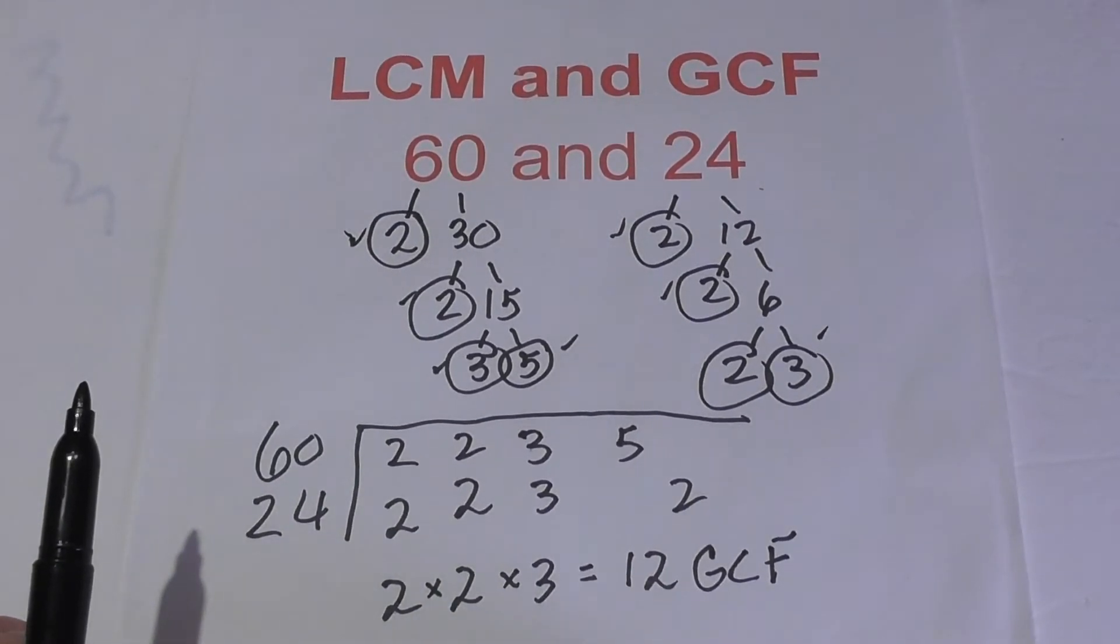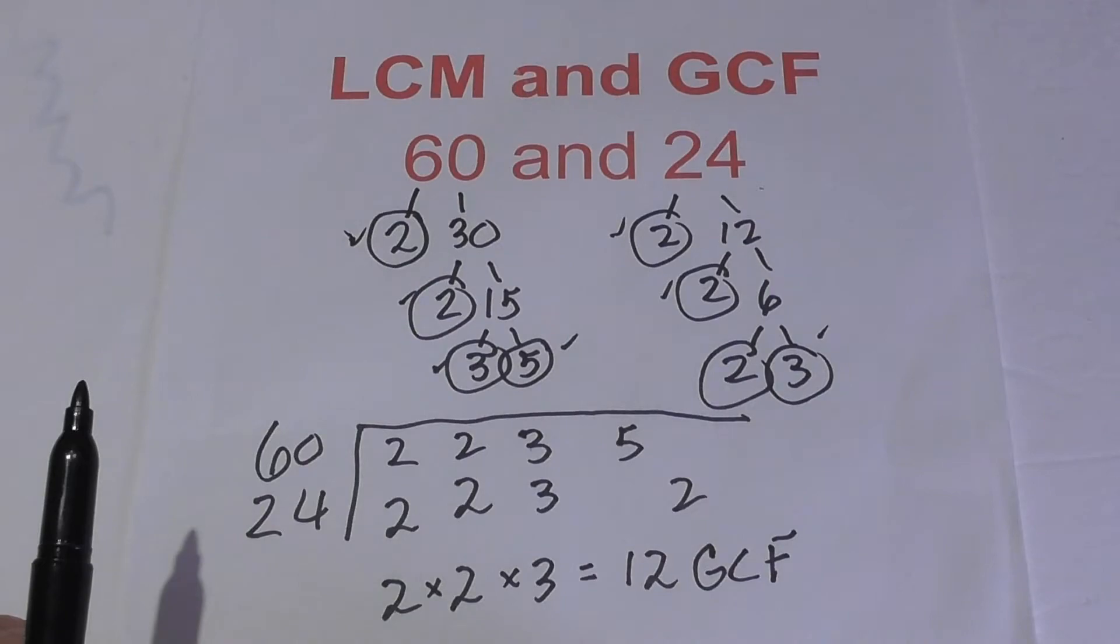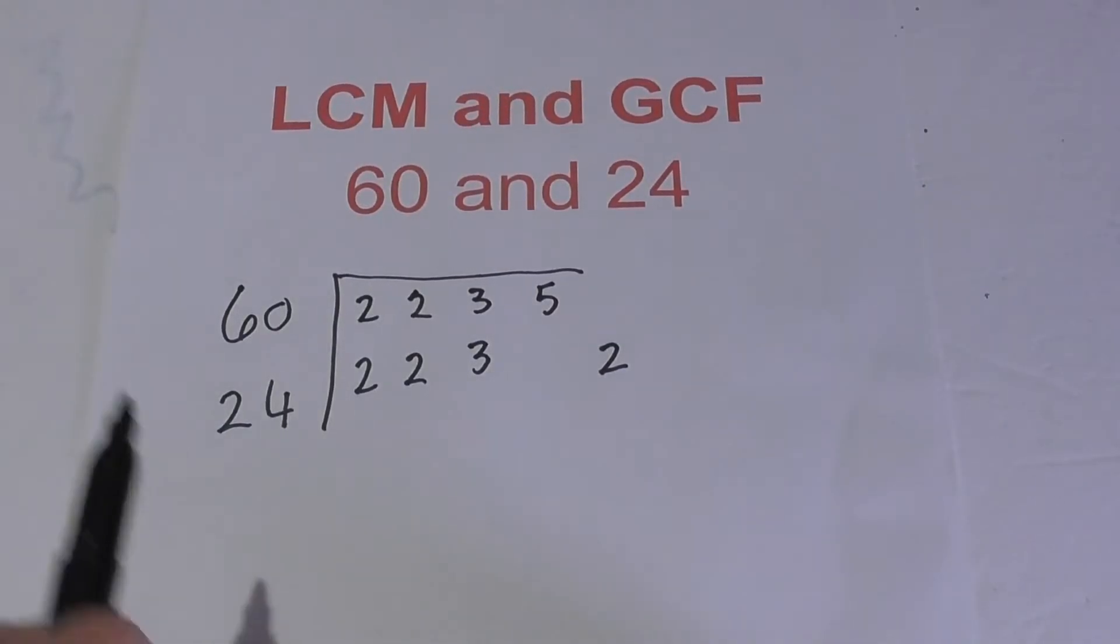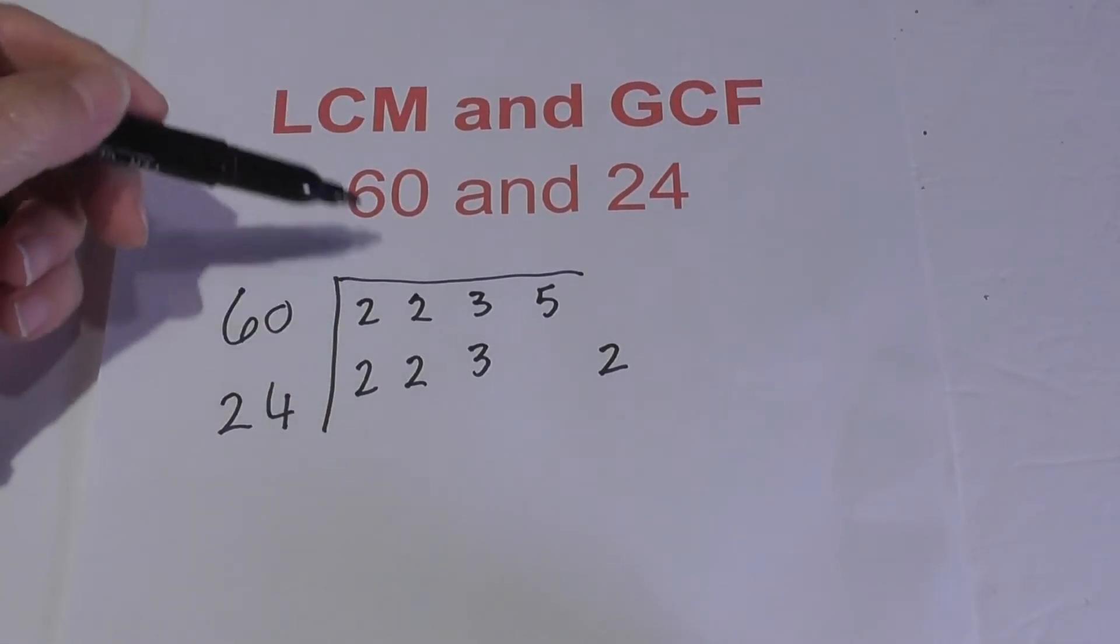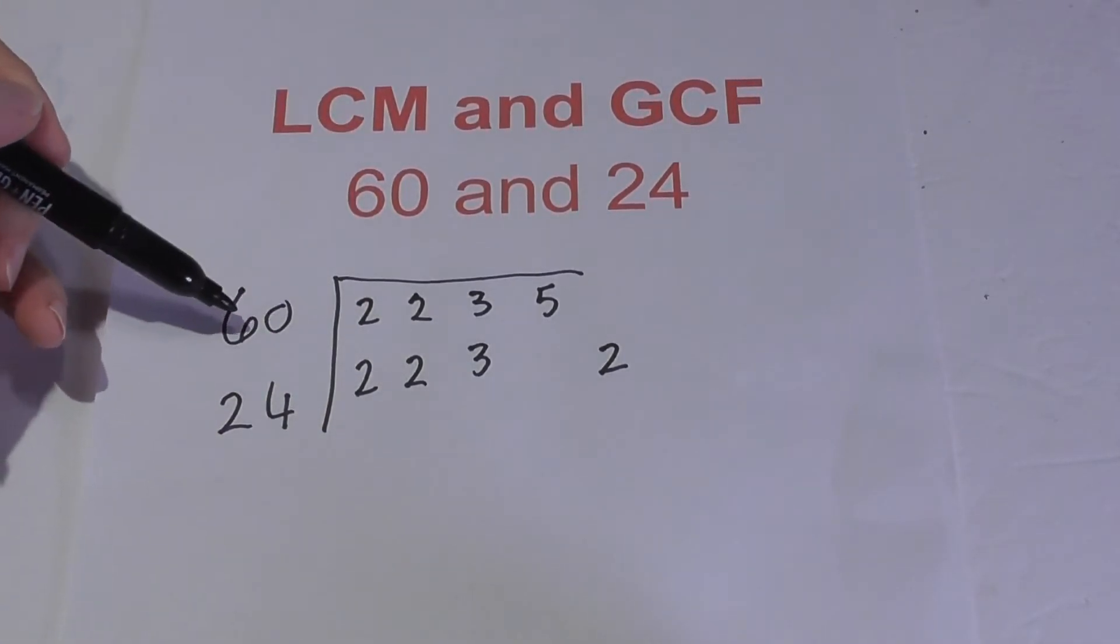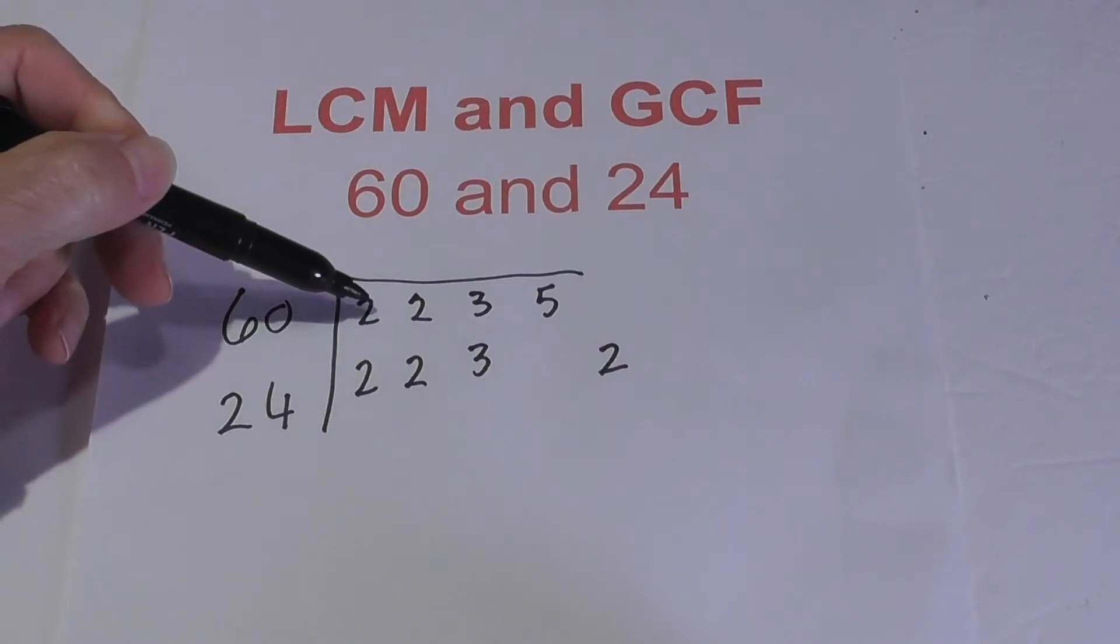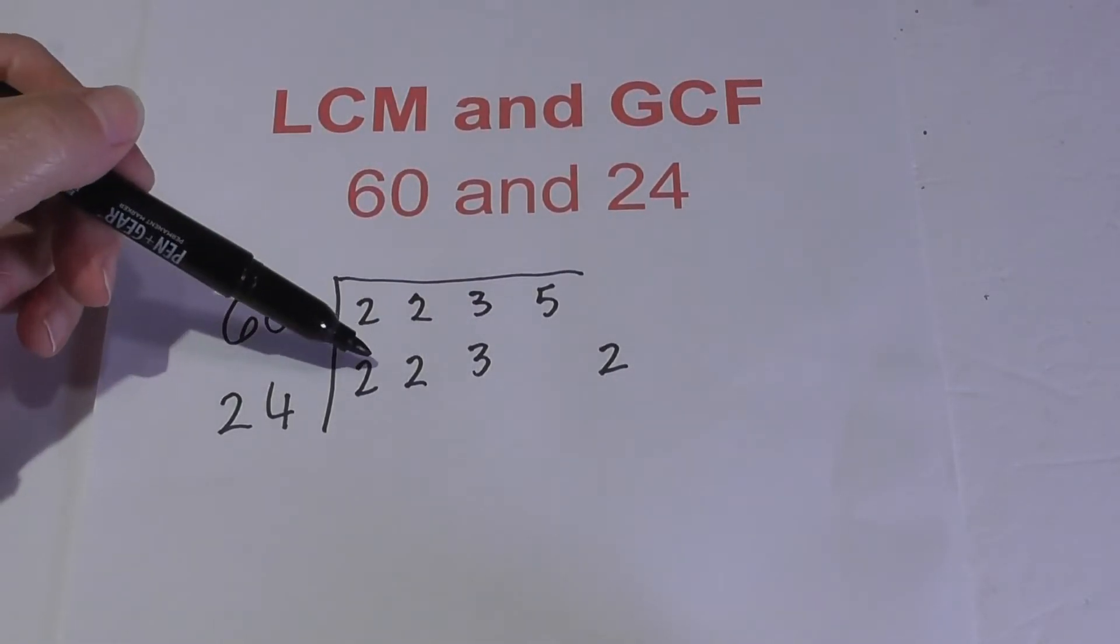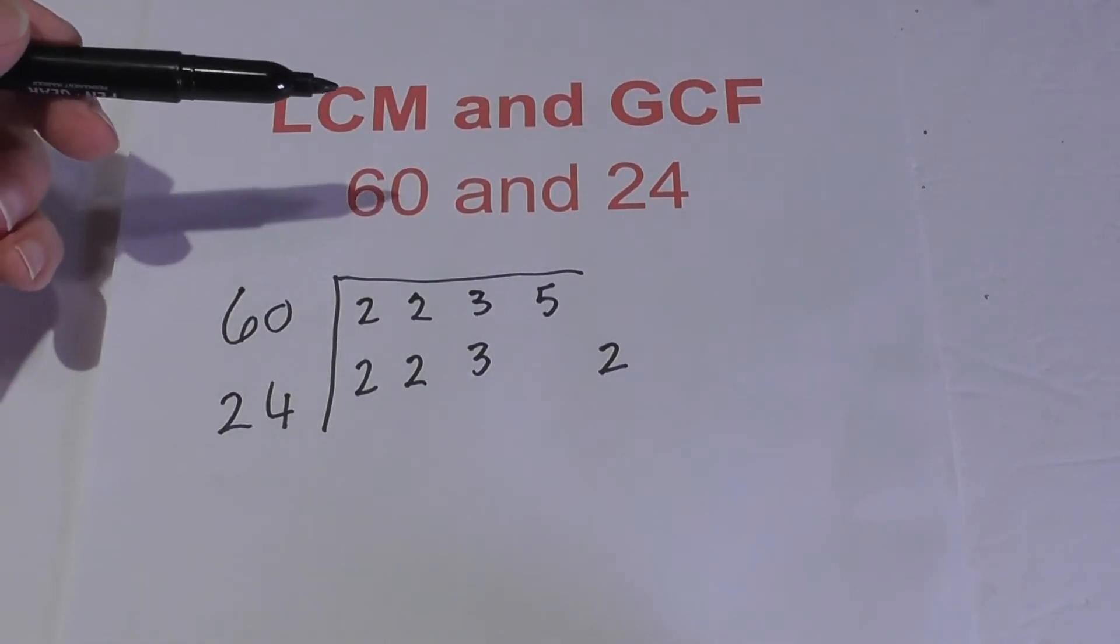Now we can use the exact same chart to find the lowest common multiple. For the LCM, I've just rewritten this chart from the factor tree. The prime factors of 60 are 2 times 2 times 3 times 5, and the prime factors of 24 are 2, 2, 3, and 2.